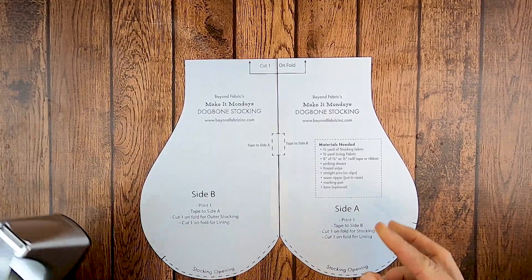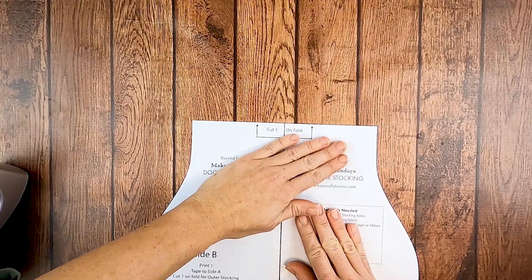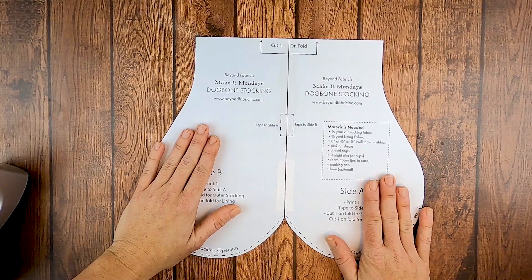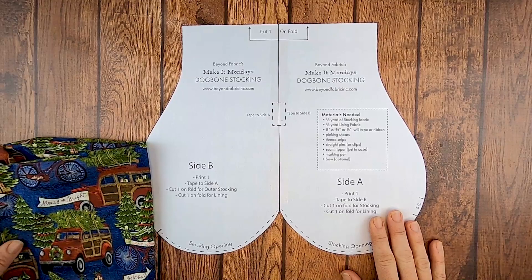Now this pattern was made so that you can put this on the fold of your fabric and then you'll be cutting out the whole piece. But if you don't want to do that, you can always print a double of this and then you can just tape it right here so you have the full one. But I will go grab some fabric and I will show you how to fold the fabric and lay this down.